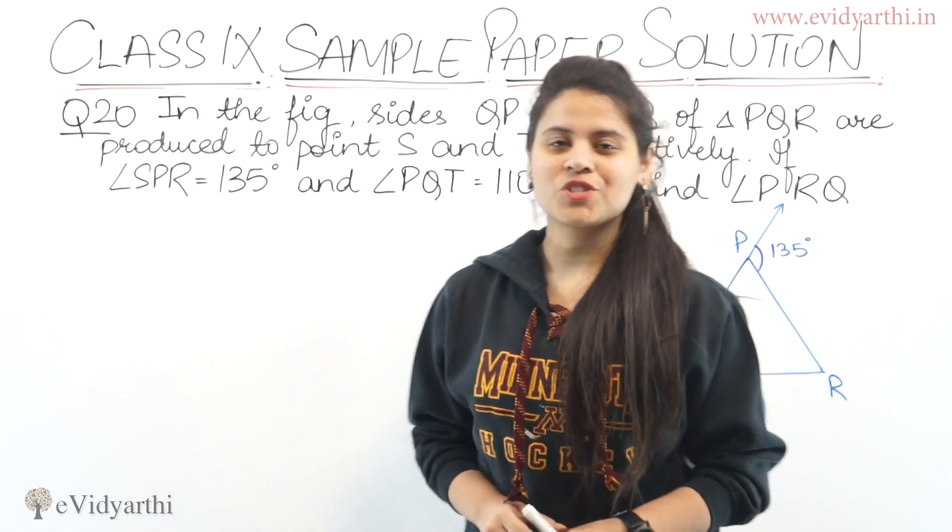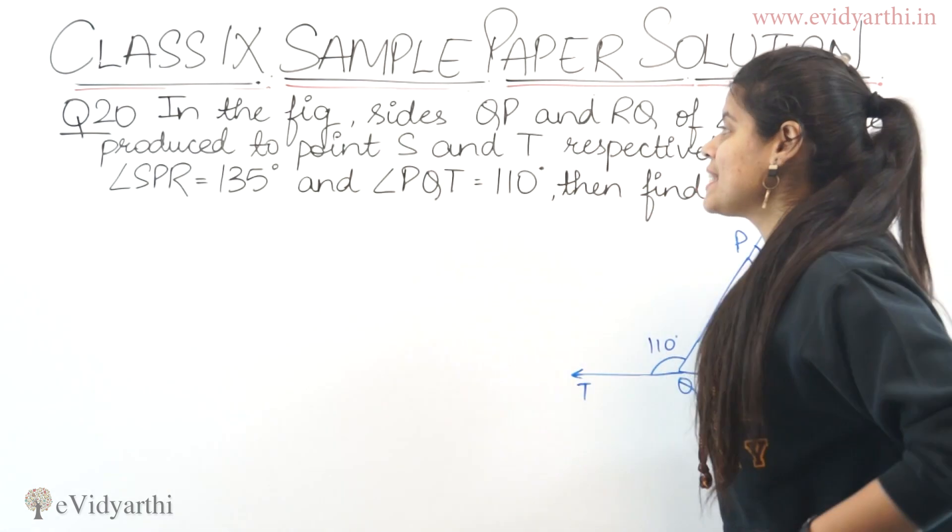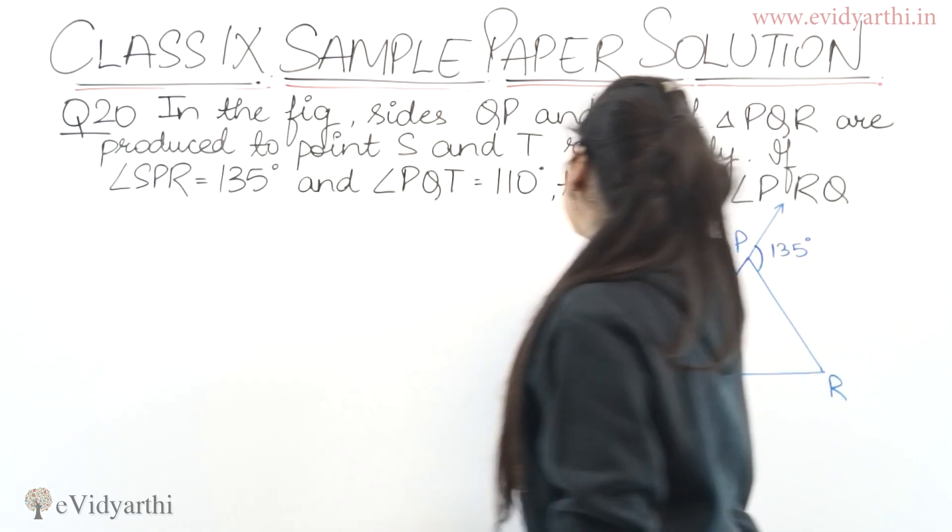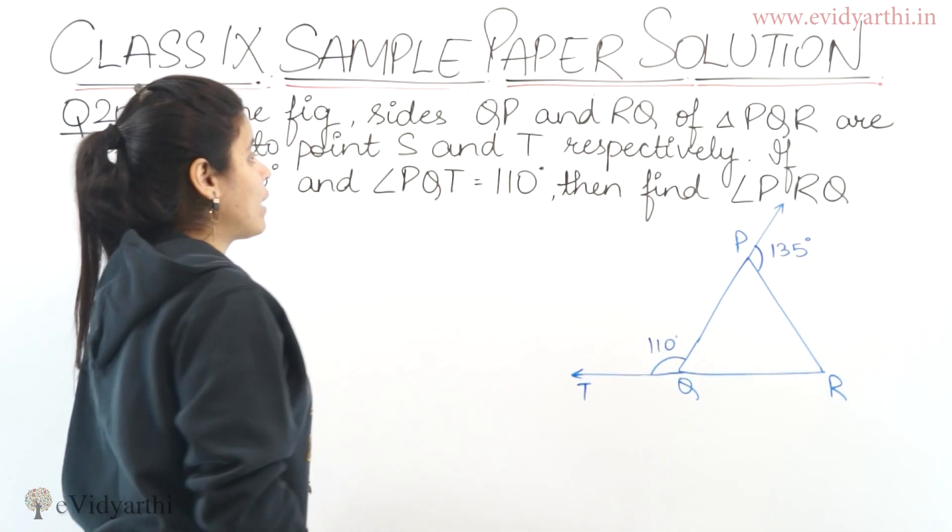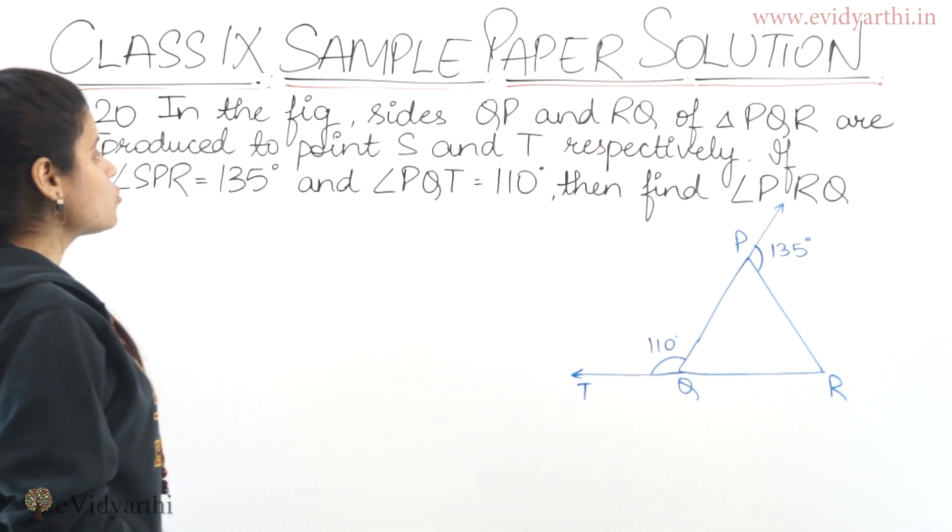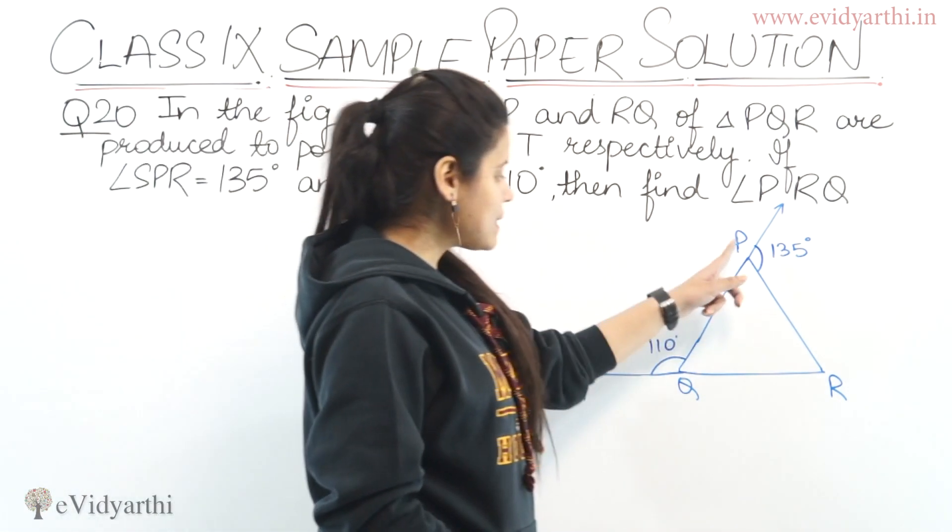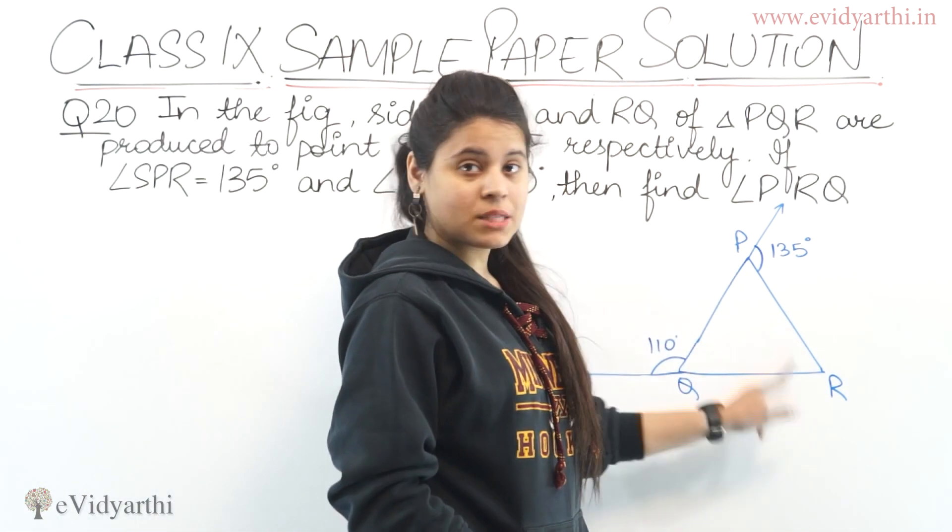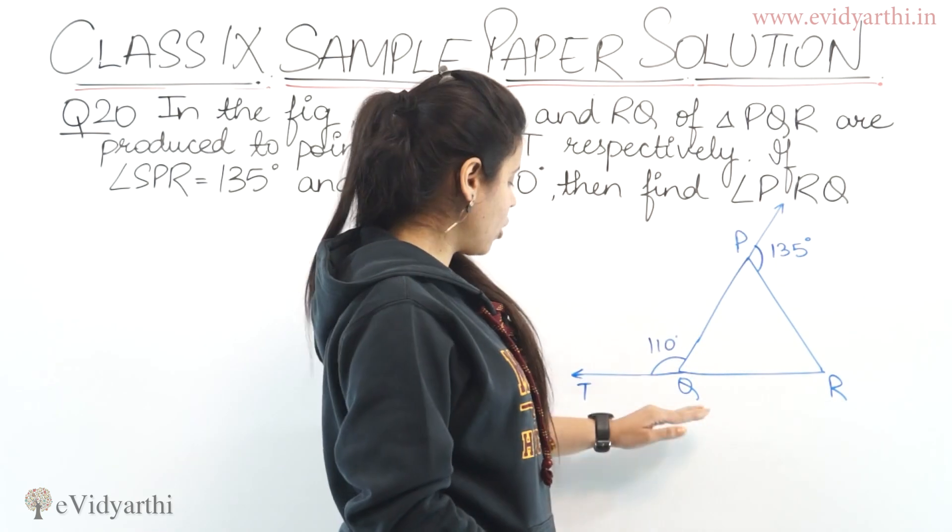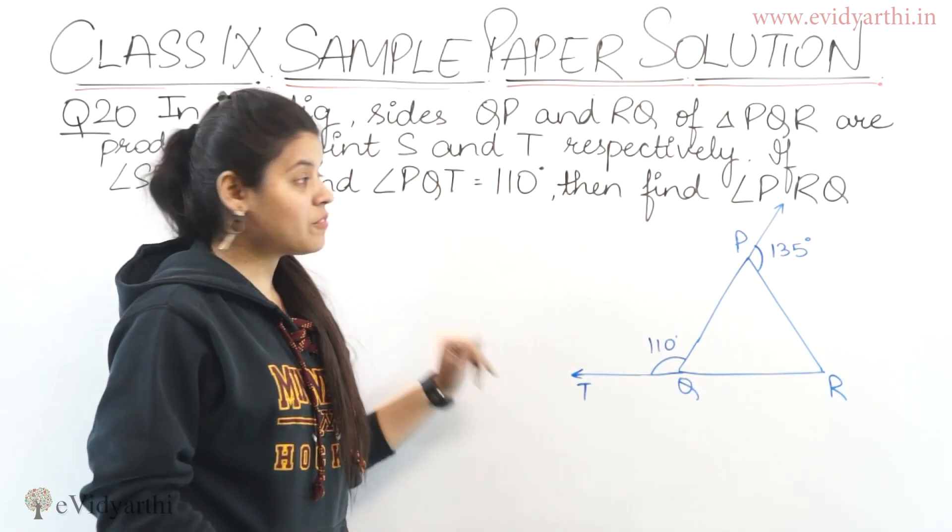Now coming to the next question which is question number 20. The question says in the figure, sides QP and RQ of triangle PQR are produced to points S and T respectively. So we have triangle PQR where point P is here and point Q is extended here.